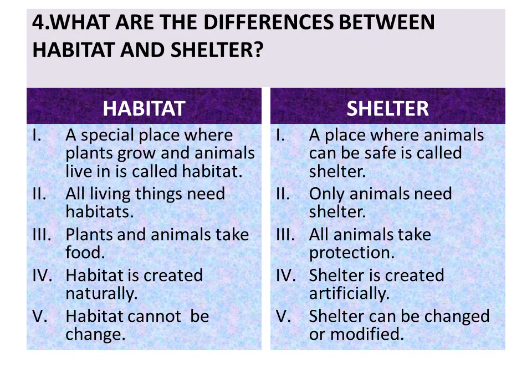Question four: What are the differences between habitat and shelter? Five differences are: First, a special place where plants grow and animals live is called habitat; a place where animals can be safe is called shelter. Second, all living things need habitats; all animals need shelter. Third, plants and animals take food from habitat; animals take protection from shelter. Fourth, habitat is created naturally; shelter is created artificially. Fifth, habitat cannot be easily changed or modified.